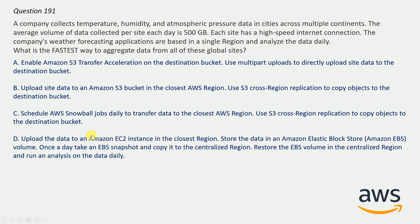The correct answer here will be option A: Enable Amazon S3 transfer acceleration on the destination bucket and use multi-part upload to directly upload site data to the destination bucket. This is correct because you might want to use transfer acceleration on a bucket when a customer uploads to a centralized bucket from all over the world, and you want to transfer gigabytes to terabytes of data on a regular basis across continents. Both these are the requirements here in the question, so option A is correct.